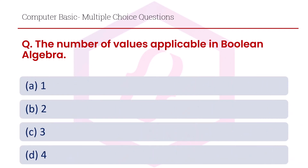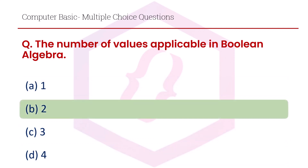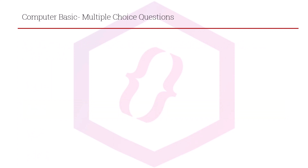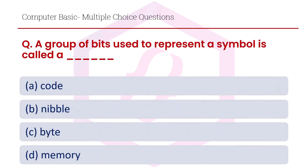The number of values applicable in boolean algebra is: option A 1, option B 2, option C 3, option D 4. The right answer is option B, 2.